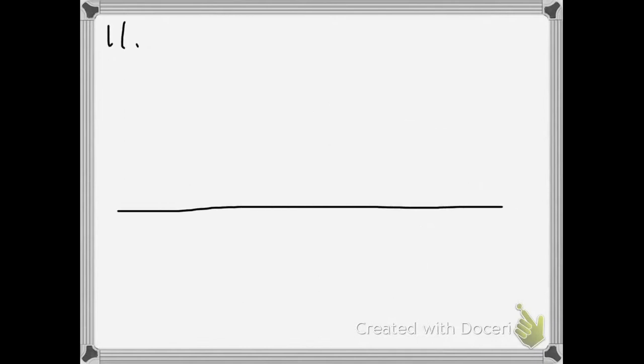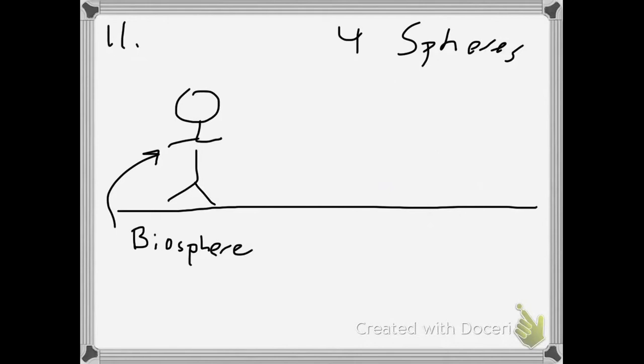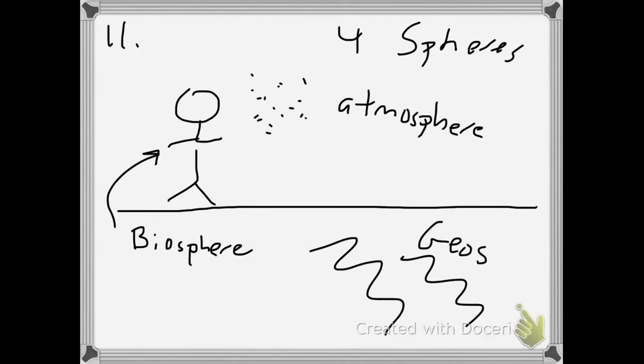Question number eleven: we want to examine the four spheres of the Earth. So here you are. Can you name the four spheres? Of course, you belong to the biosphere, as well as all living things. And you're breathing air—it may not be the best clean air, probably is polluted—so this is the second sphere called the atmosphere. Of course, all this rock that you're standing on is part of the geosphere, and of course what's missing is all the water of the planet, which is called the hydrosphere.